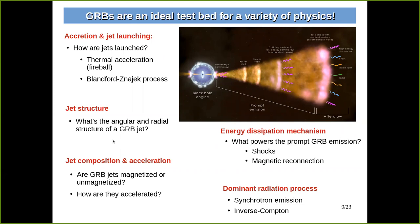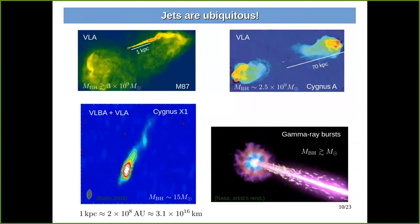Most of these questions are not relevant only for GRBs but also to other astrophysical sources, because jets are ubiquitous in the universe. For example, the radio jet of M87 on kiloparsec scales, the radio jet of Cygnus A on much larger scales — both powered by black holes of billions of solar masses — and on smaller scales the radio jet from Cygnus X-1, powered by a stellar mass black hole. Similarly, GRBs involve a stellar mass black hole. Because GRB sources are so distant and unresolved, we cannot see their jets directly and can only show an artist's rendition.